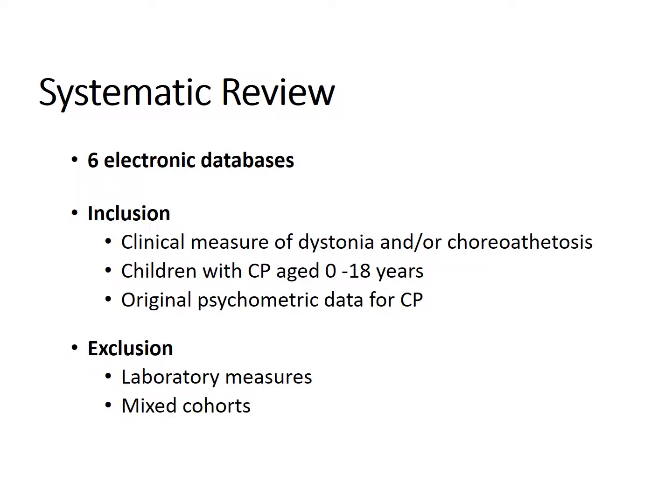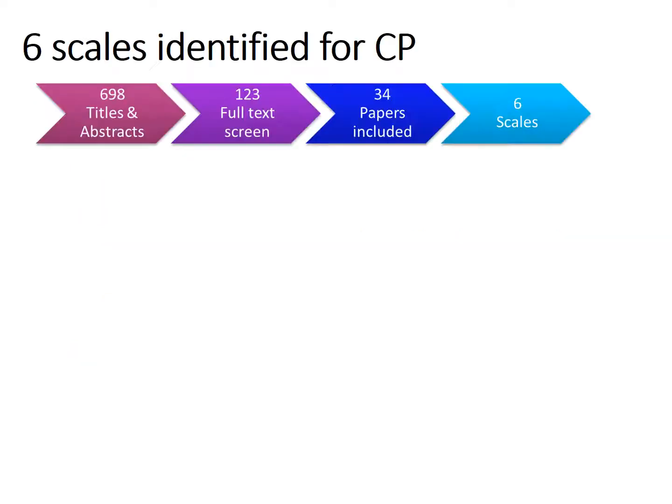We undertook this systematic review to identify and critically examine the psychometric properties and clinical utility of tools reported to measure dystonia and choreoathetosis in children with dyskinetic CP. The review identified 34 papers for 6 scales that are reported to measure dystonia and/or choreoathetosis in children with cerebral palsy.